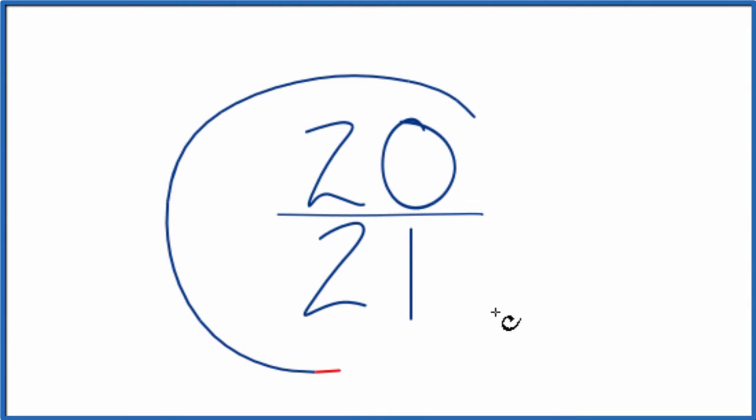Let's simplify the fraction 20 over 21. What we want to do is find another fraction that's equivalent, that has the same decimal value as 20 over 21 or 20 divided by 21, just that we've simplified it or reduced it down to lowest terms.